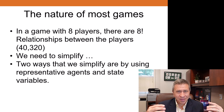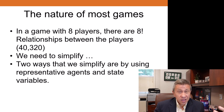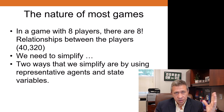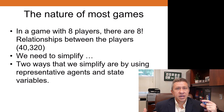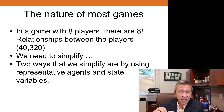If you have eight separate players, there are literally eight factorial relationships between the players — it's over 40,000 different possible relationships. So even with just eight, it's not feasible. We must simplify in order to solve the games. And imagine what happens once you're dealing with hundreds, thousands, or millions of players. We have to think a little bit differently and come up with a couple of simplifications. Two key ways that we simplify are by using representative agents and state variables.